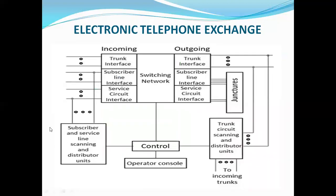This is a bigger view of the previous picture. We have a centralized switching network. We have three types of connections: trunk lines meaning exchange-to-exchange connections, with interfaces to maintain all the trunk line connections. We have subscriber line interfaces meaning exchange-to-subscriber connections. This is for maintaining and fault detection — the service circuit interfaces. We have a scanner device here — subscriber and service line scanning and distributor unit. We also have trunk circuit scanning and interface units. Incoming trunks will be scanned and forwarded.